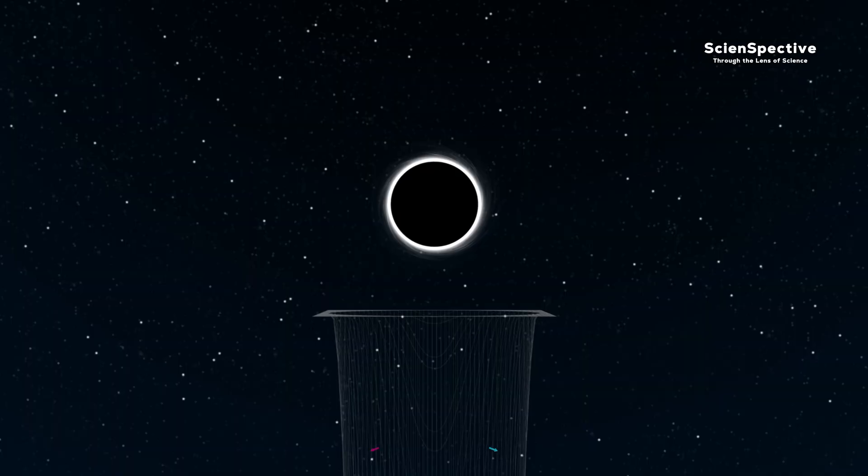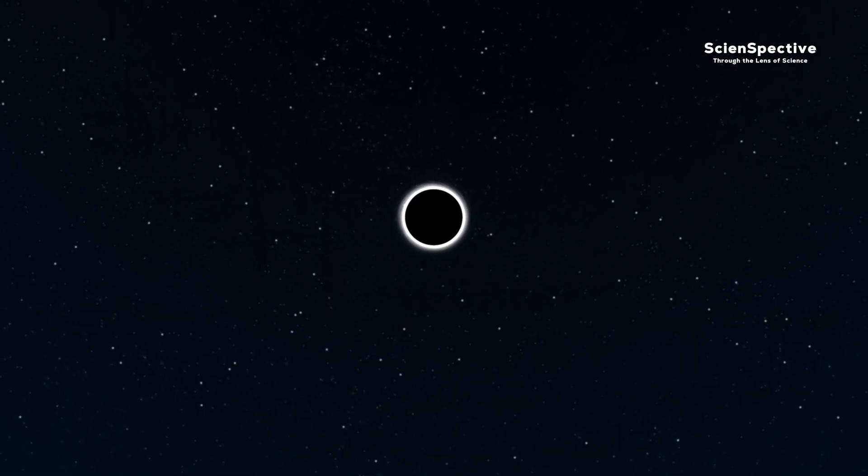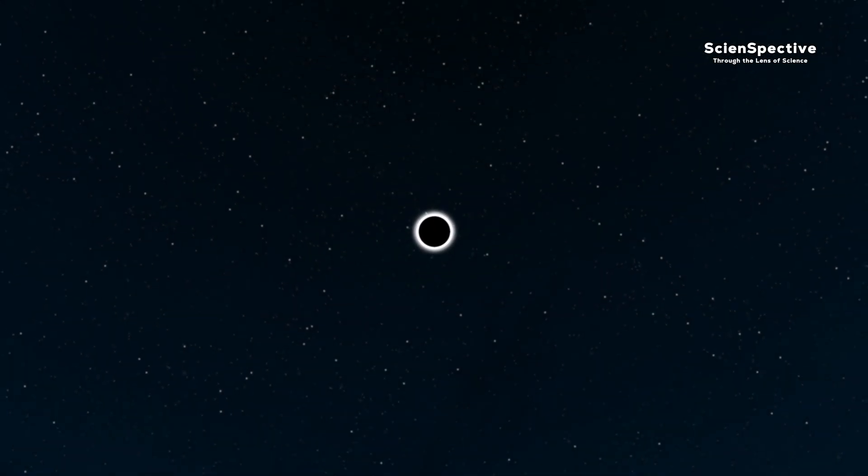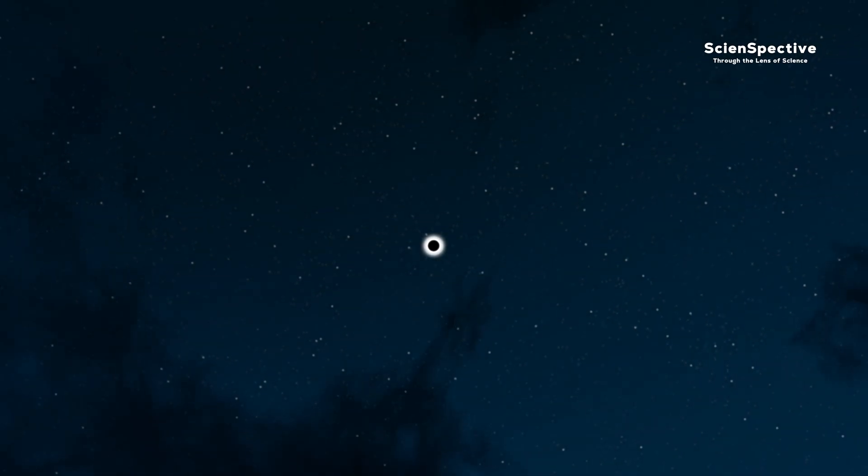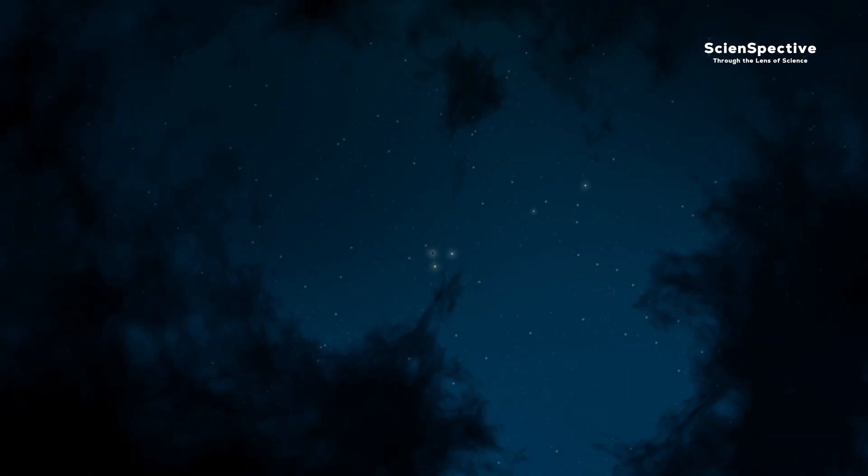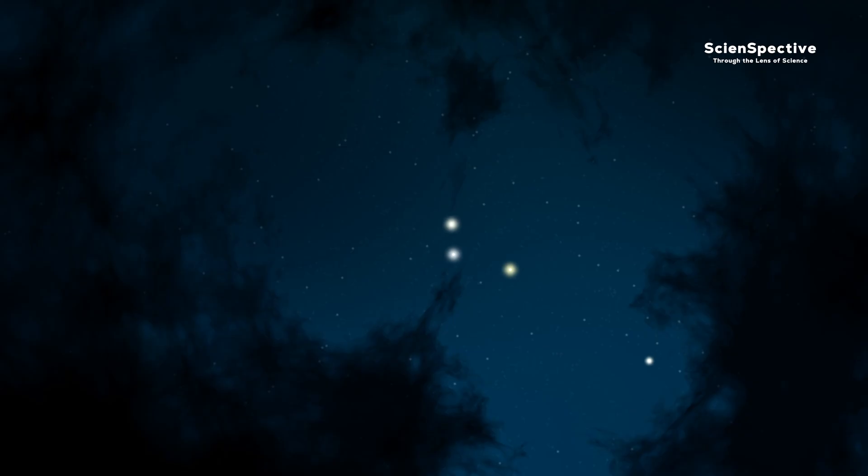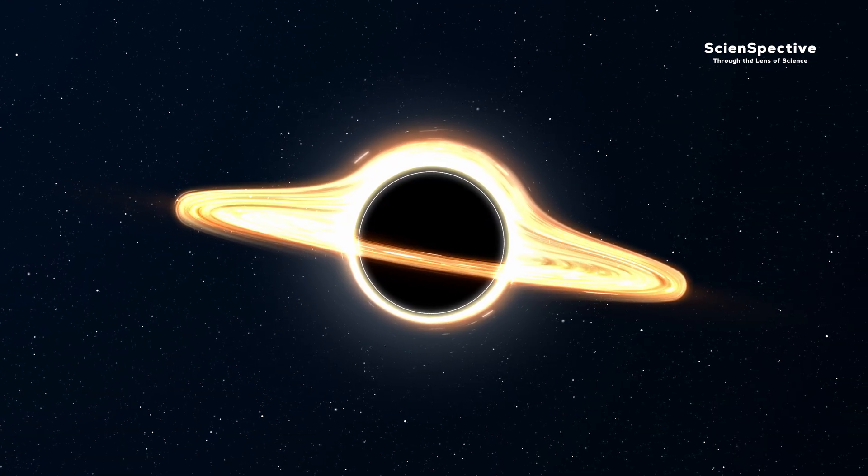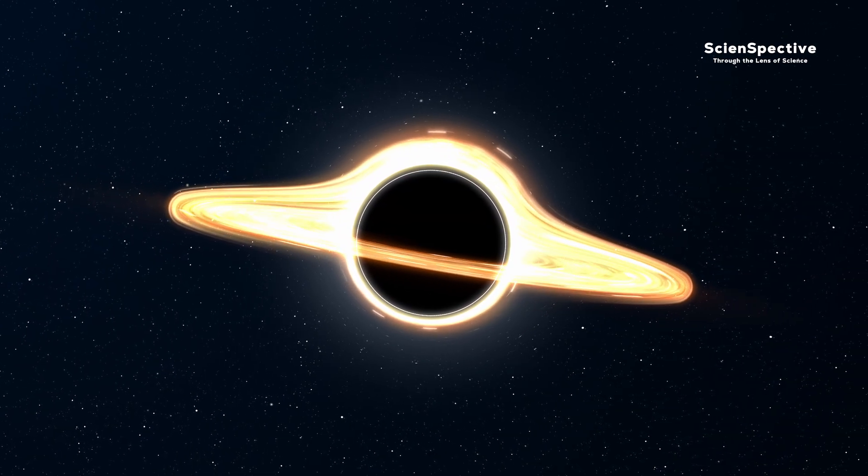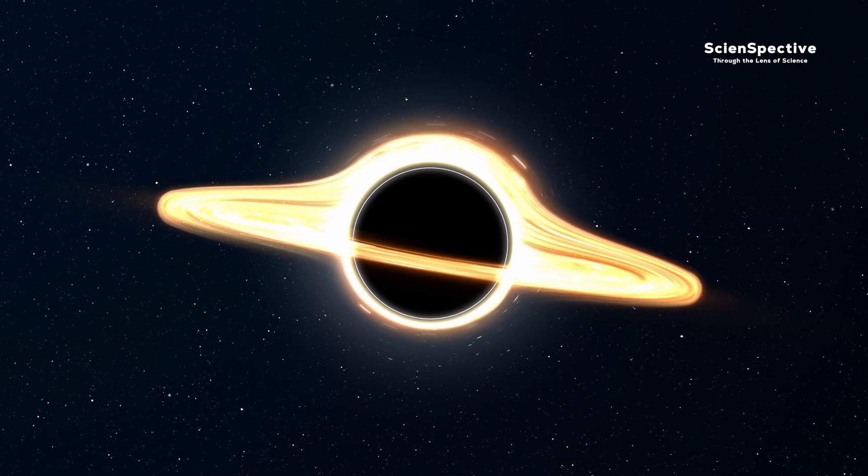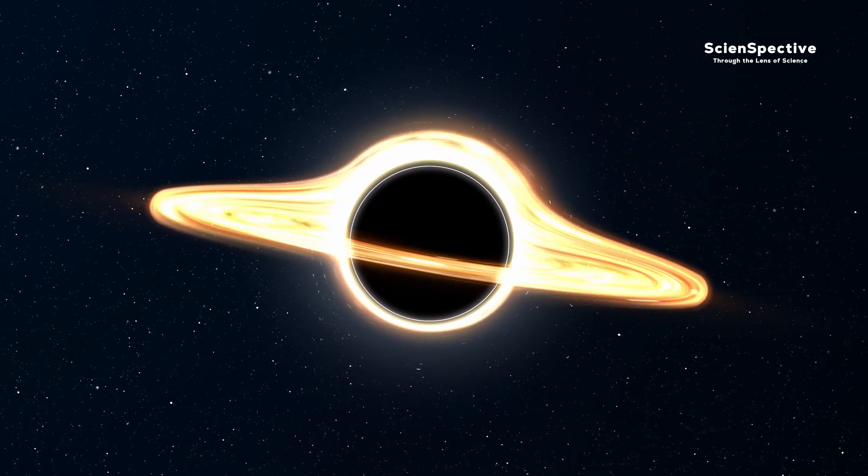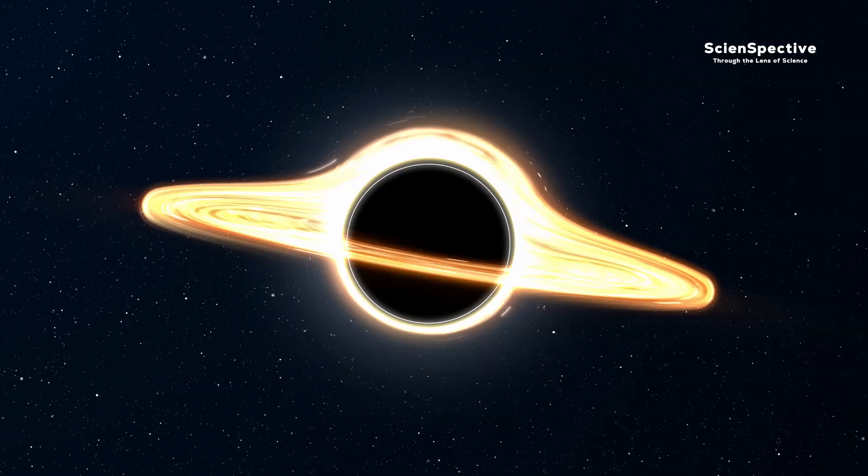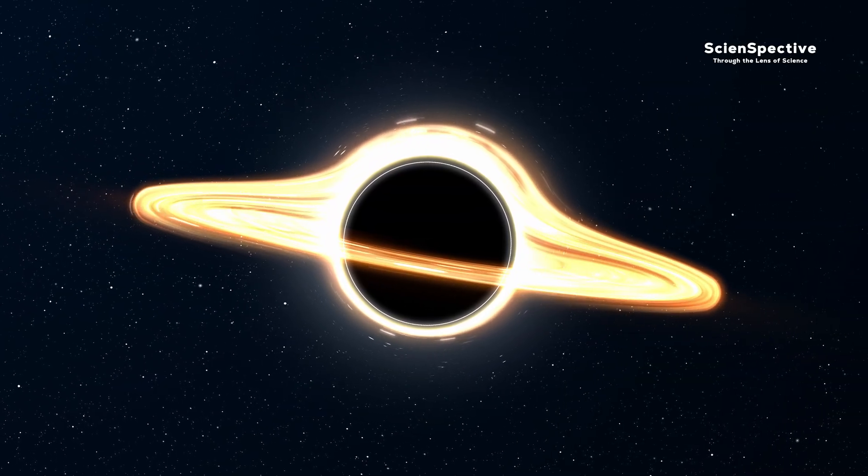Since black holes emit no light and don't reflect light from other stars, we can only detect their existence by their effects on their surroundings. Sometimes it seems like stars are orbiting around nothing at incredible speeds. But in reality, they are orbiting a black hole. The curved space-time around a black hole bends light, distorting the image of stars. This distortion is called gravitational lensing, because it resembles how an optical lens distorts an image.